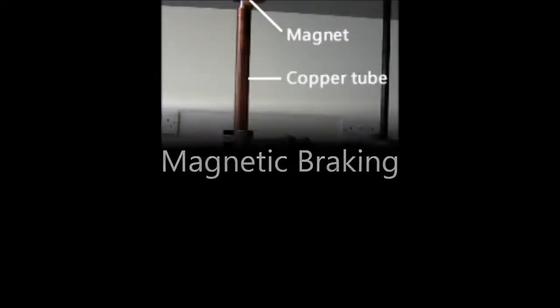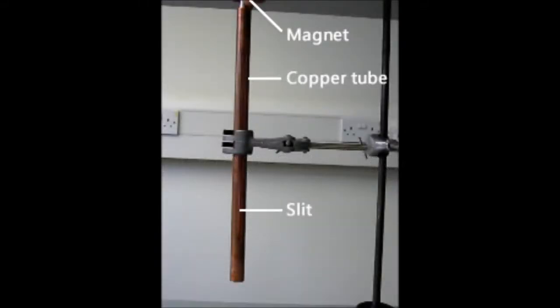Magnetic braking is a type of braking which doesn't rely on mechanical pressure, as is common in most braking systems. We'll demonstrate this type of braking using a magnet and a copper tube.